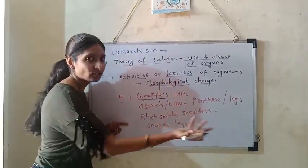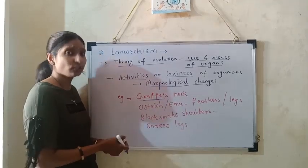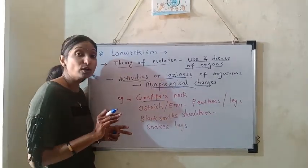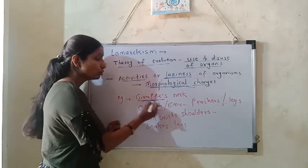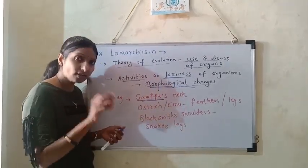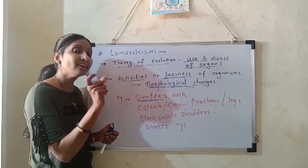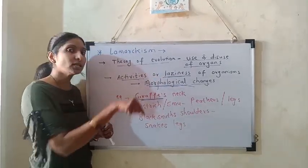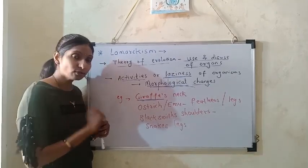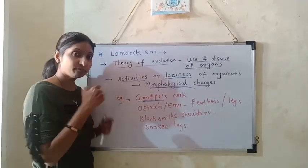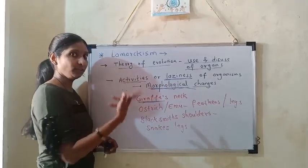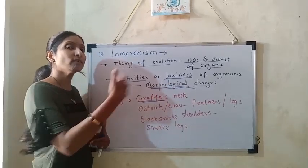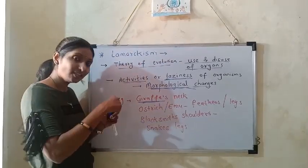Some animals are very active and have bodily changes; some are lazy and also have bodily changes. Due to the activities and laziness of organisms, morphological — that is, external character — changes take place. Ancestral giraffes ate tender leaves at the top of trees, so they started stretching their necks to reach that height. The stretching activity caused the neck length to increase over generations.